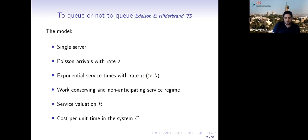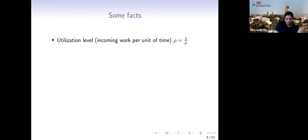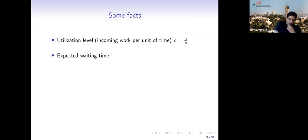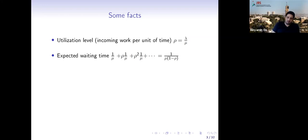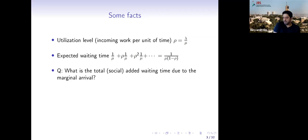Some facts about M/M/1: the utilization level ρ equals λ/μ — you can think of it as the incoming work per unit of time. Per unit of time, λ customers arrive, each bringing an amount of work of 1/μ. The expected waiting time can be computed as 1/μ inflated by a factor of 1/(1 − ρ).